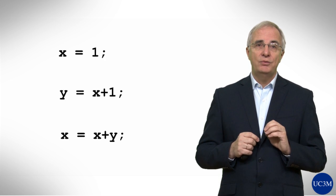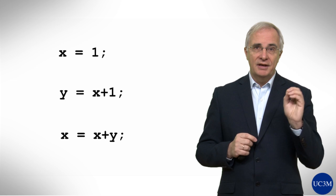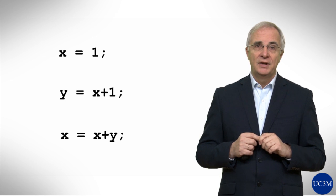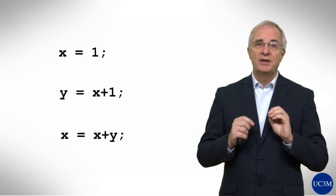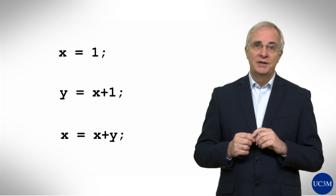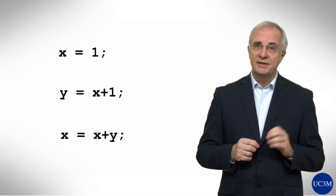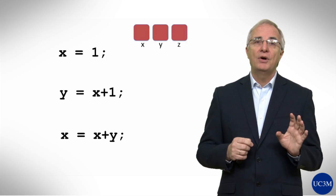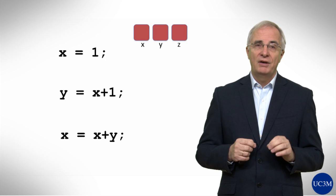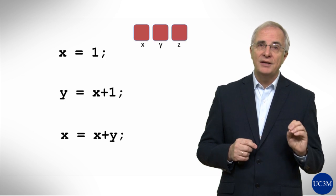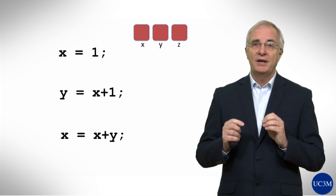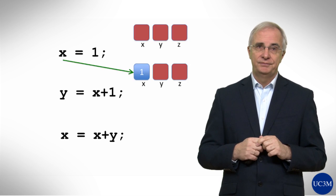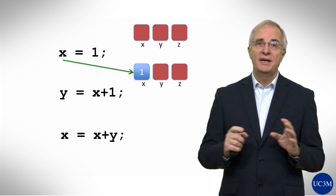Now, let's try to understand the sequence of assignment statements as we can see here. To help our understanding, we will draw the variables with the values they hold. Imagine that we have three variables, x, y, and z. We don't know the initial values. We have a first statement that assigns 1 to x. So, after execution, the content of variable x is 1. The rest remains unchanged.